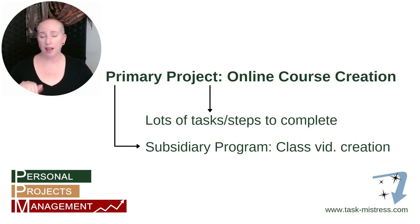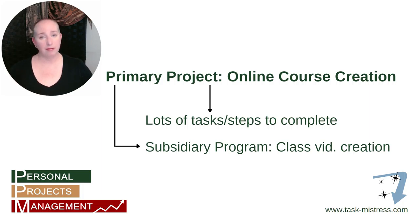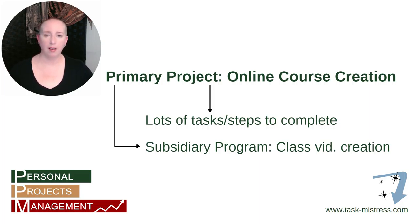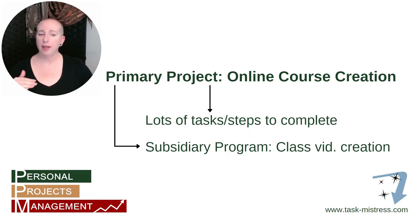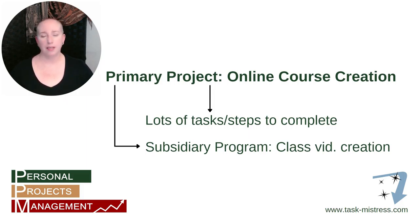Then create sub-tasks of all the steps you have to take. You can see where this gets a little complex — you have the subsidiary program of class video creation, and you might even have a sub-sub program. But what I'd honestly suggest is just create a tracking sheet in Notion, Google Sheets, or Excel, and list out all the episodes and modules you'd have to do. One of the steps would be: keep the tracking sheet up to date.